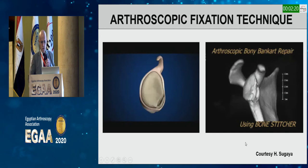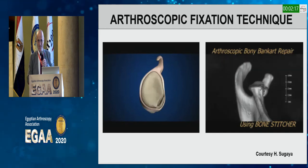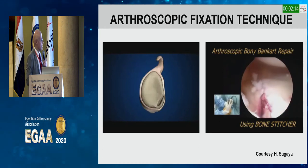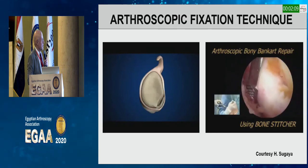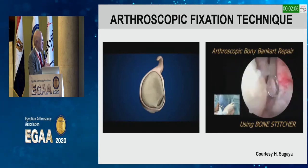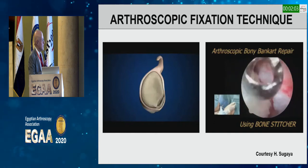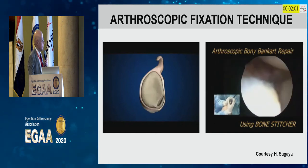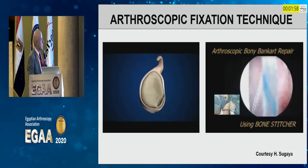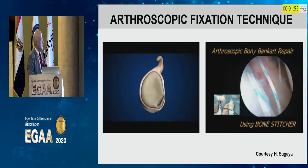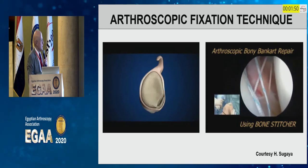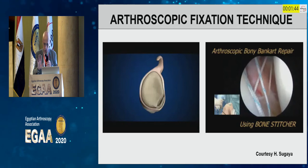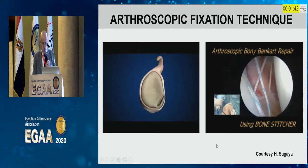With the glenoid rim fresh fracture, you refresh the bony surface and need to get the bone fragment very mobile. Remove all scar and fibrous tissue that may prevent healing. Then preload the fragment with sutures, and using the bone stitcher, go through the fragment, retrieve the suture, and compress down.